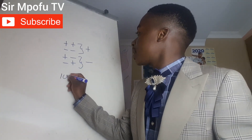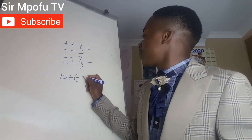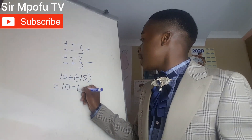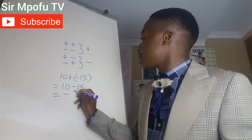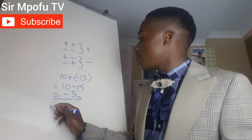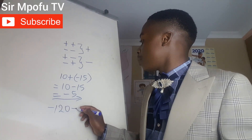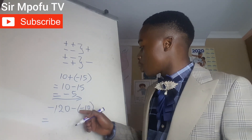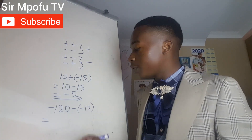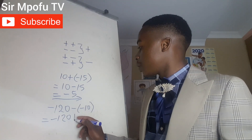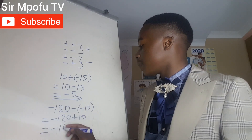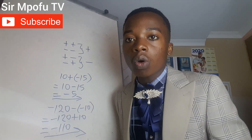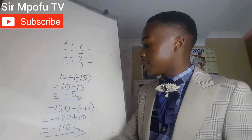Let's do other examples. We have 10 plus negative 15. Positive and negative gives us a negative, so this equals 10 minus 15, and our final answer is negative 5. Another example: minus 120 minus minus 10. As usual, solve the signs in the middle first — minus and minus, same signs, they give you a positive — so it becomes plus 10, and the final answer is negative 110.